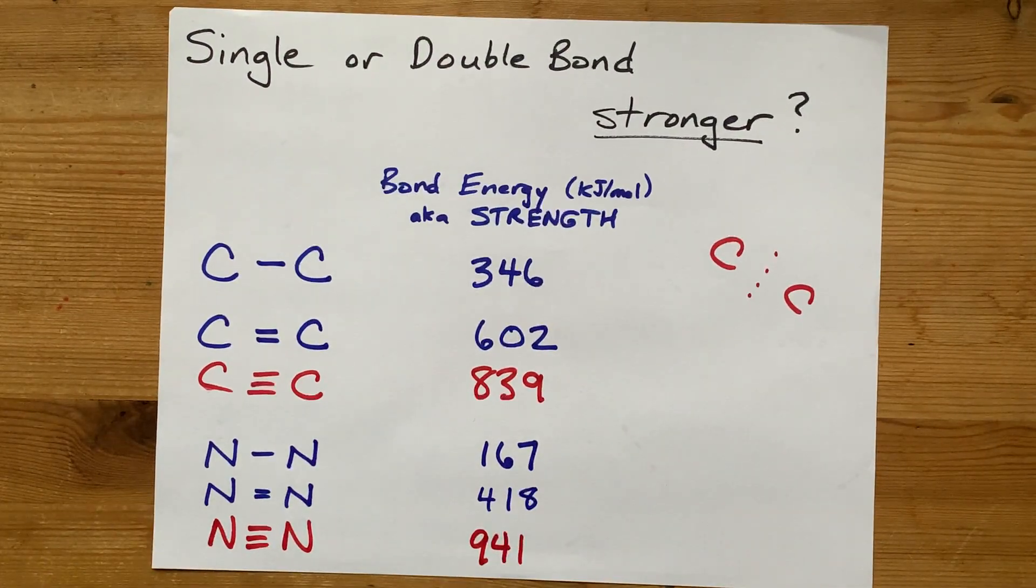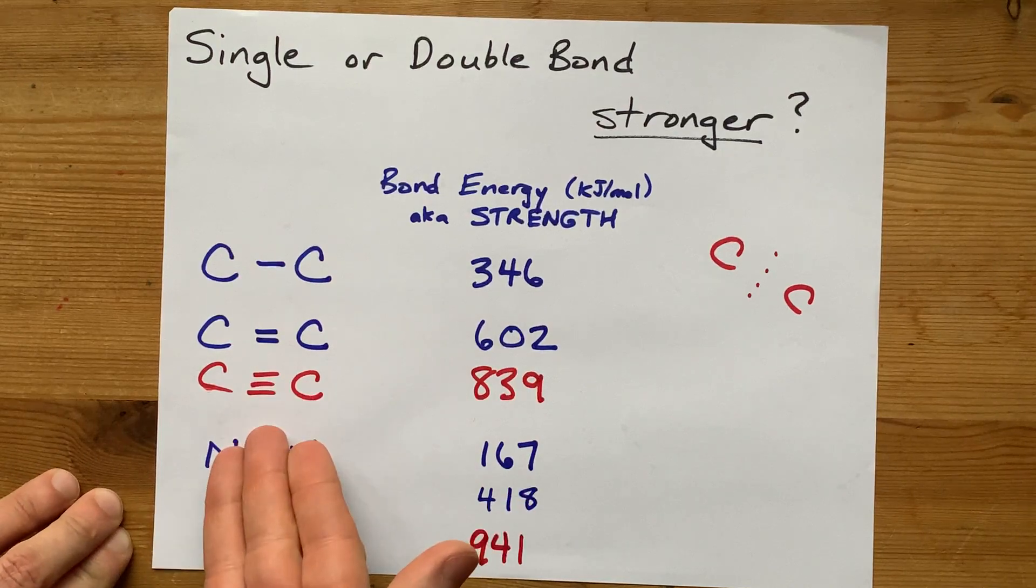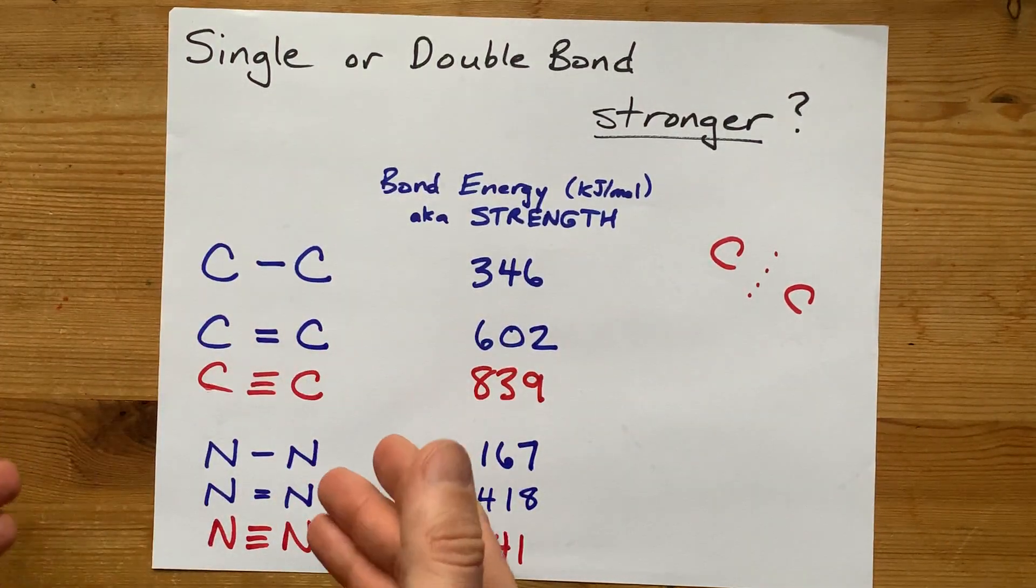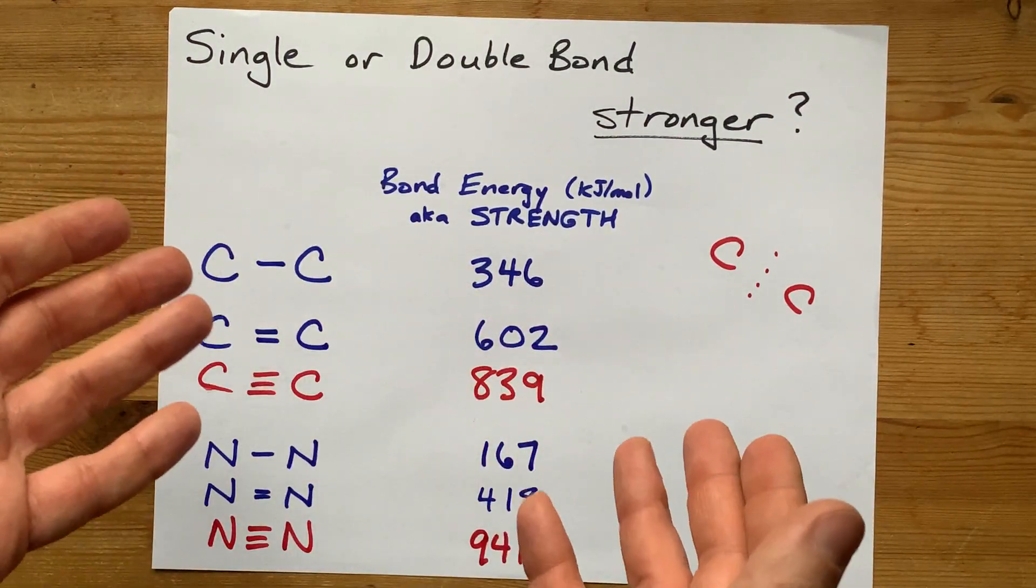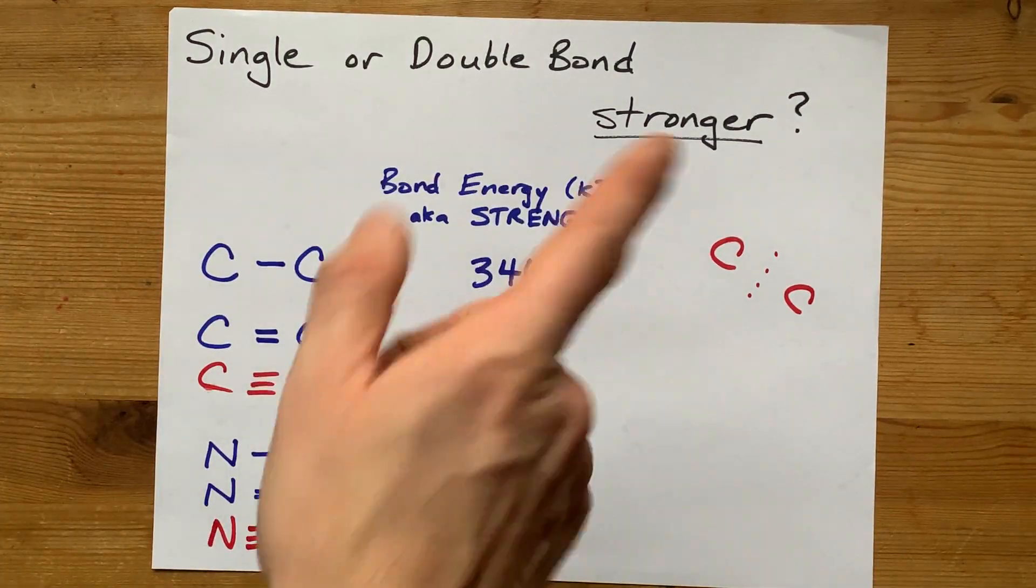Anyways, point is, higher bond order, a.k.a. or like the number of bonds between two atoms. As that goes up, the strength of the bond goes up. The end. Thanks for being with me, and best of luck.